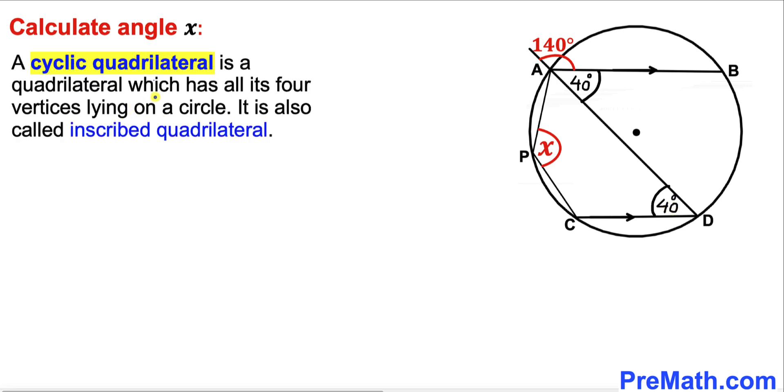Now let's recall a cyclic quadrilateral—a quadrilateral which has all its four vertices lying on a circle. In our case, these vertices A, P, C, and D are on the circle.